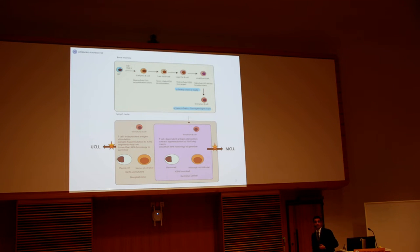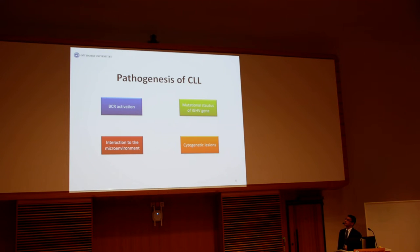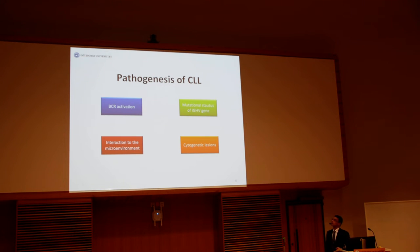On the other hand, in the mantle zone, somatic hypermutation is not necessary, if any at all, and unmutated CLL might develop from these populations of mature B-lymphocytes. Coming to the pathogenesis of the disease, it mainly hinges on B-cell receptor activation, the mutational status of IgHV, the interaction with components of the microenvironment, and cytogenetic aberrations.